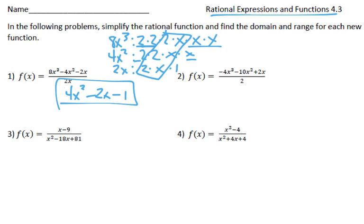Number 2, same idea. We can pull a 2 out of all of these, leaving us with a negative 2, because the 2s would cancel out. x³, because we didn't have any x's, minus 5x² plus x. And that's really as simple as we can go.